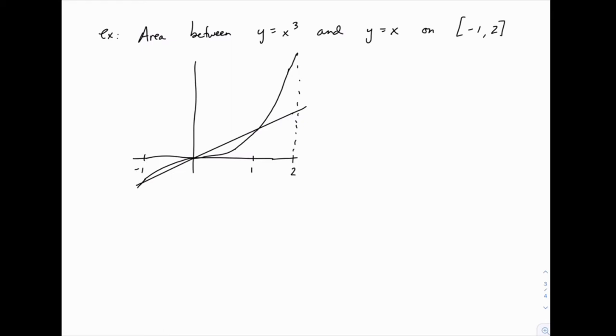Notice that y equals x cubed and y equals x cross each other three times: once at x equals negative 1, once at x equals 0, and once at x equals 1.